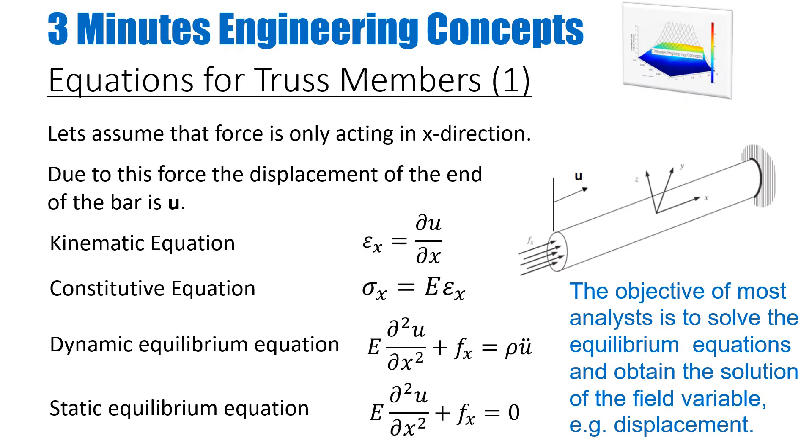In the previous video, I introduced you to the equations of truss members. Truss members are 1D structures which have a uniaxial load acting on them in their axial direction, as shown in this figure here. I introduced you to the fact that if a force is applied on one end of the truss member while it's fixed from the other end, then it will cause a displacement u in the member. Based on this, I can define the kinematic equation which relates the strain with the displacements.